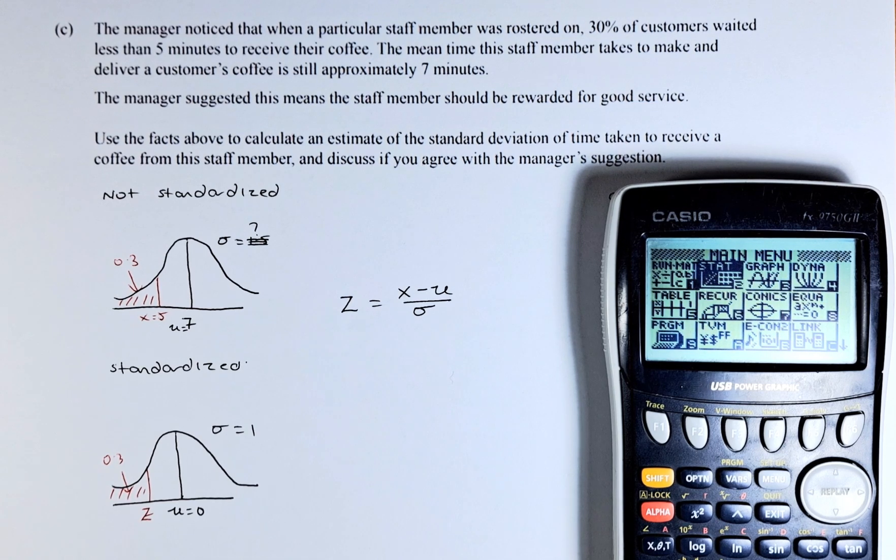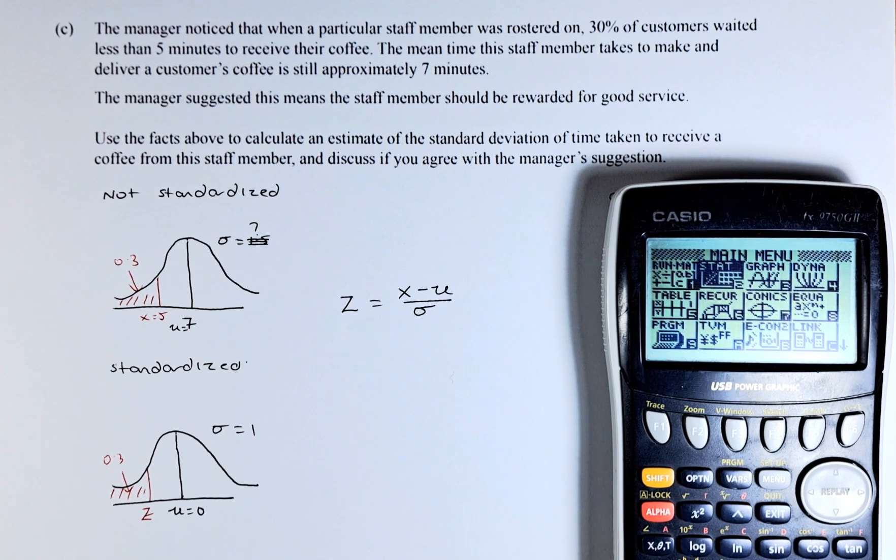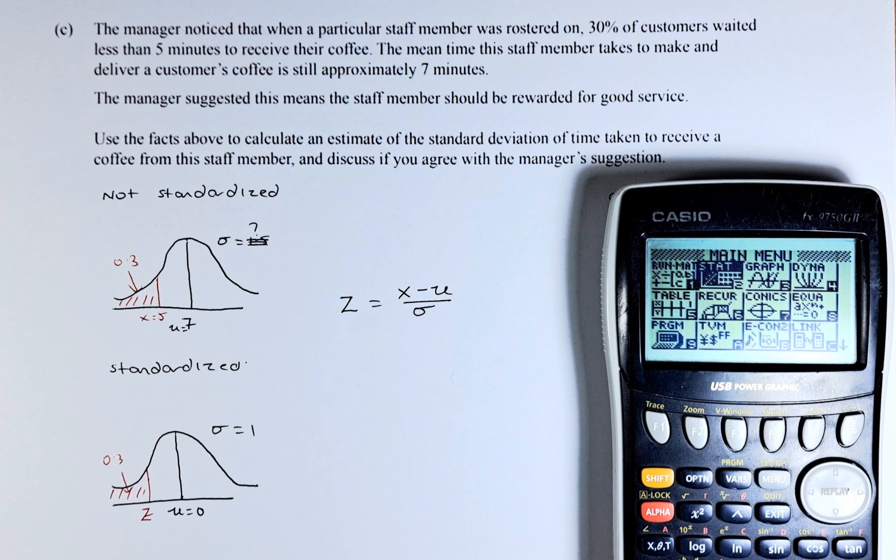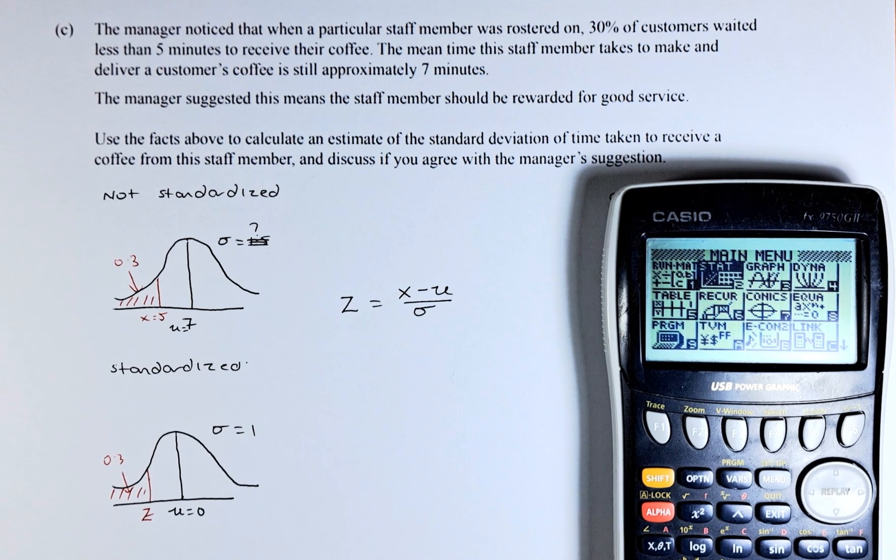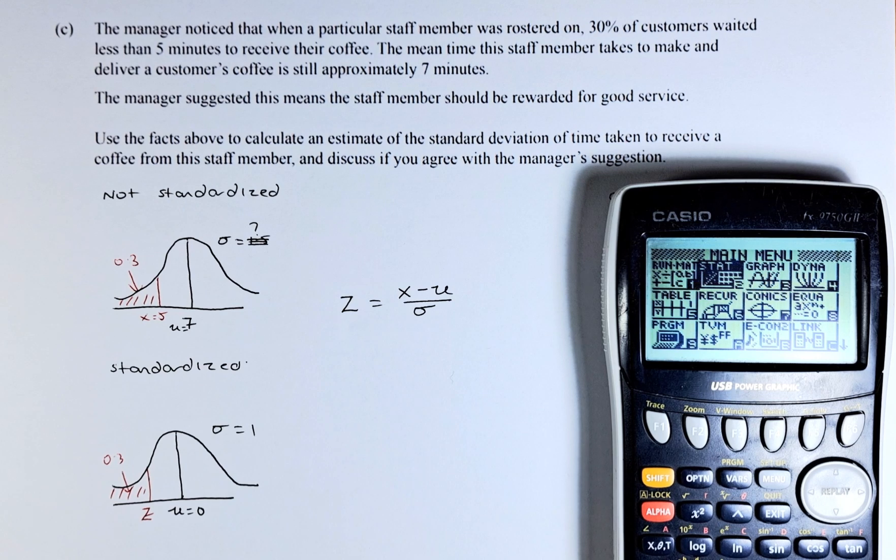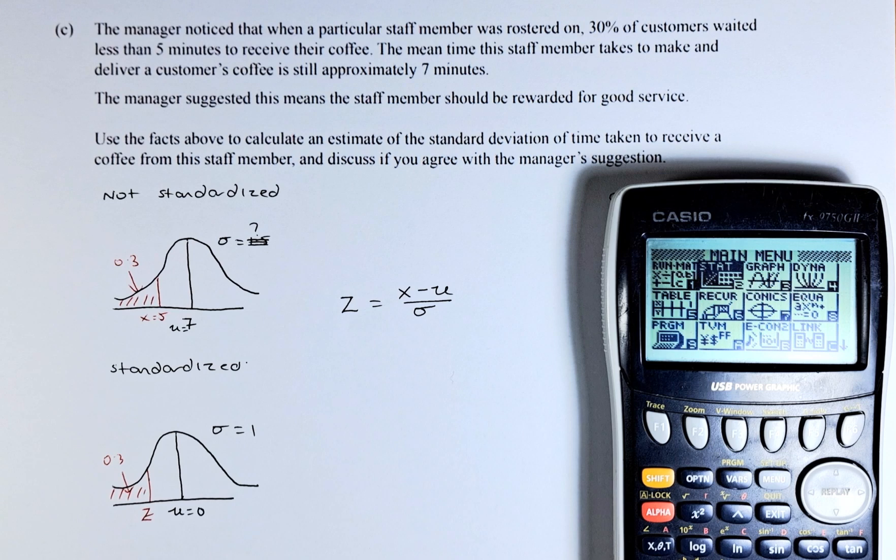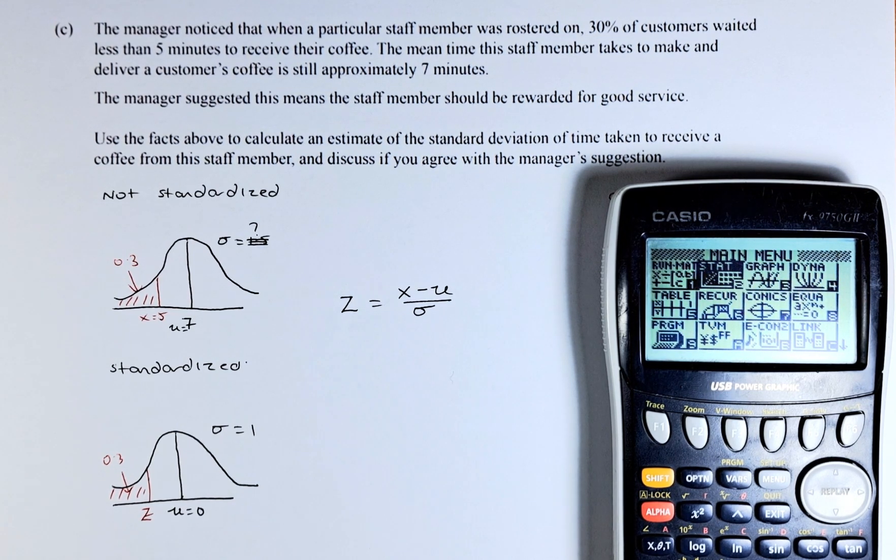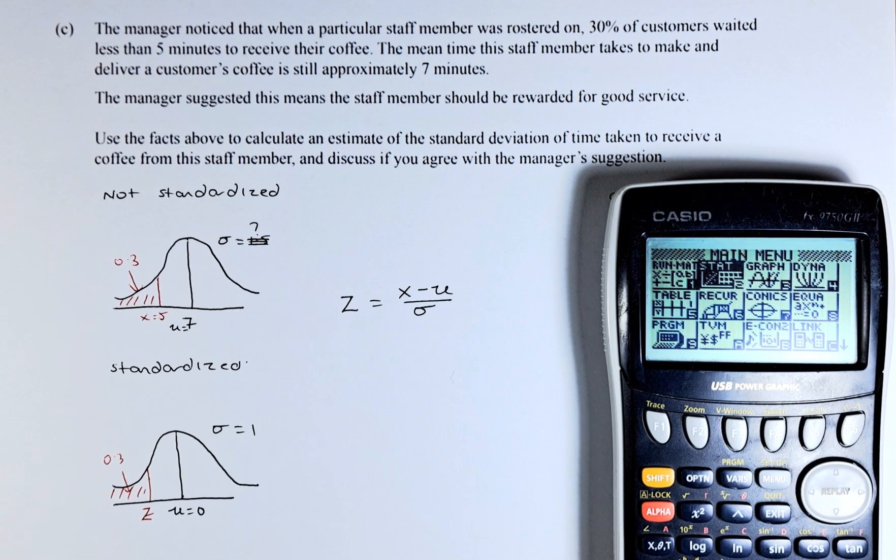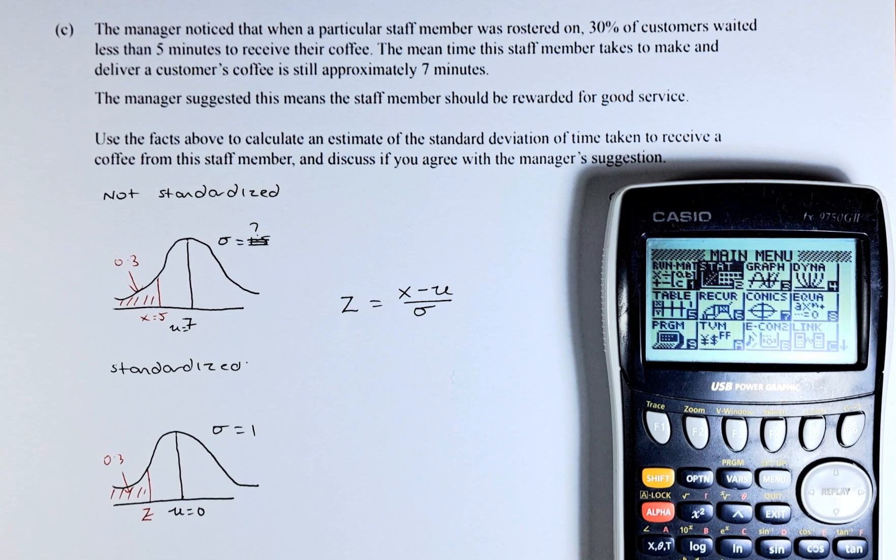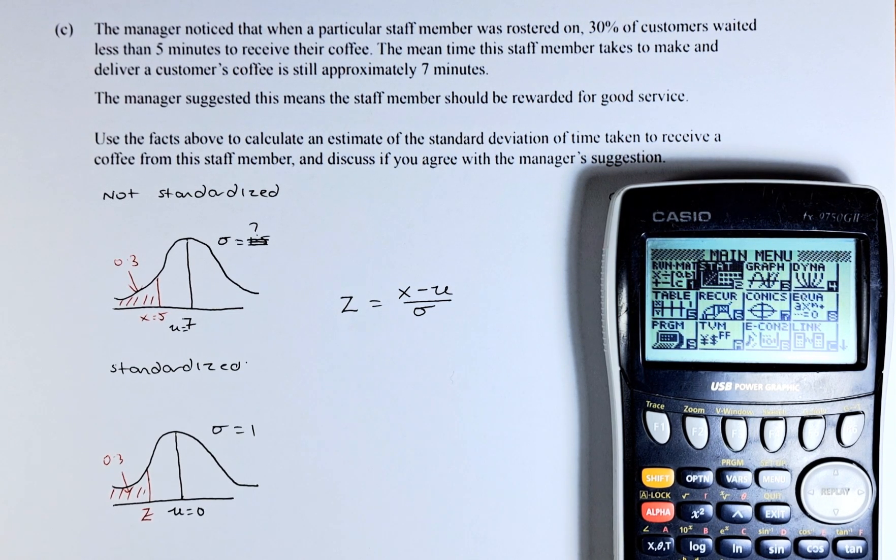The question reads like this. The manager noticed that when a particular staff member was rostered on, 30% of the customers waited less than 5 minutes to receive their coffee. The mean time this staff member takes to make and deliver a customer's coffee is still approximately 7 minutes. The manager suggested this means the staff member should be rewarded for good service. Use the facts above to calculate an estimate of the standard deviation of time taken to receive a coffee from this staff member and discuss if you agree with the manager's suggestion.